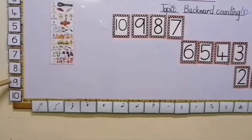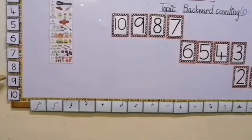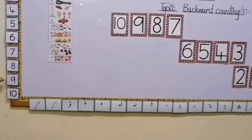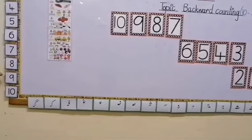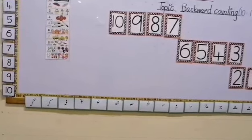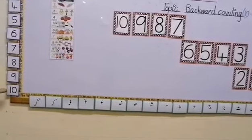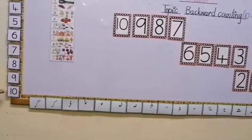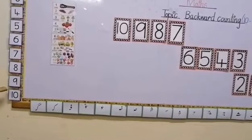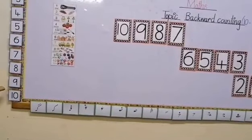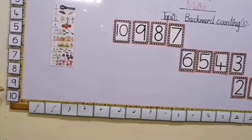And what comes after number 9? Very good, that's great. It's number 10 — 1, 0, 10. Repeat with me: 1, 0, 10.